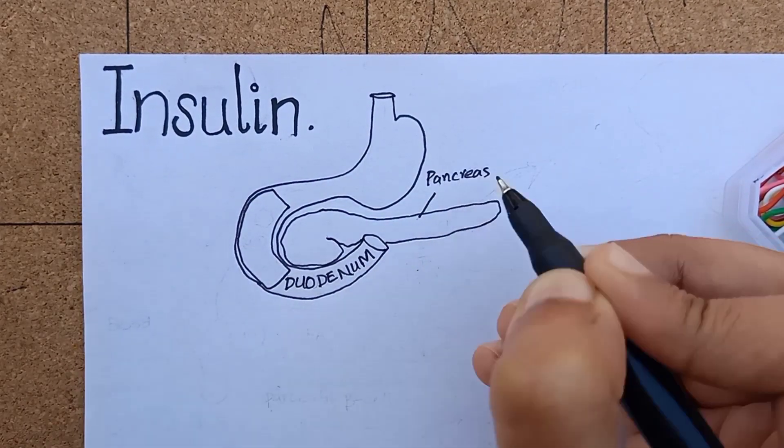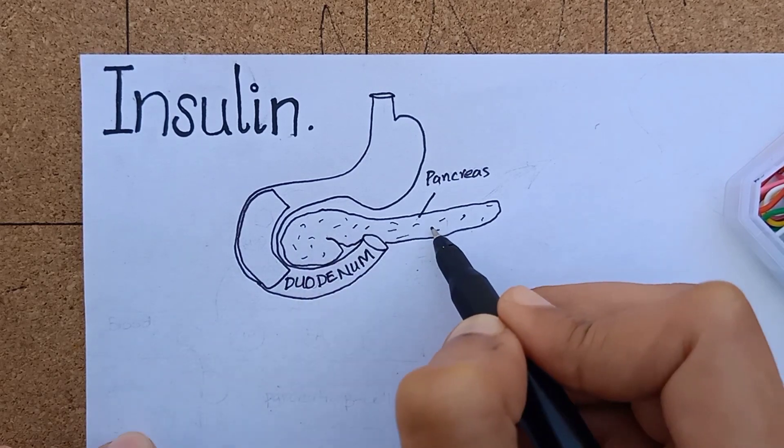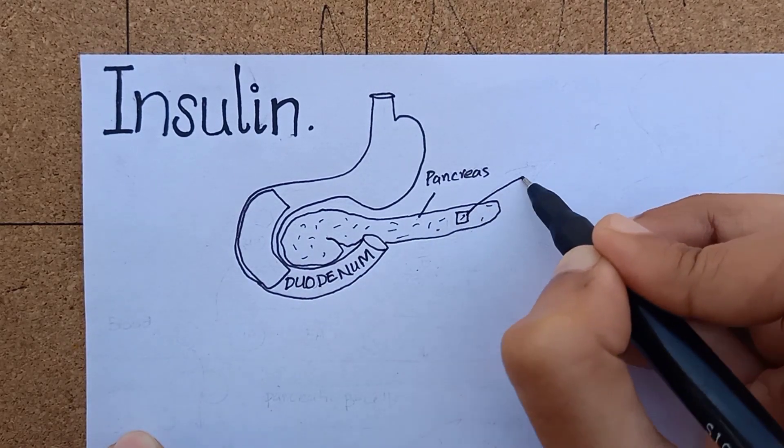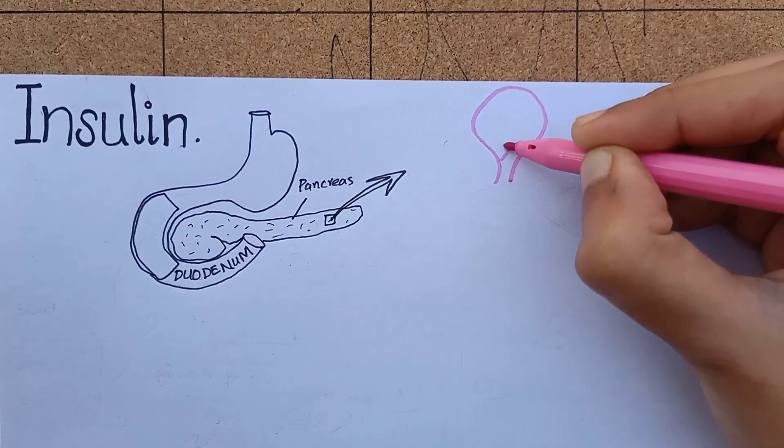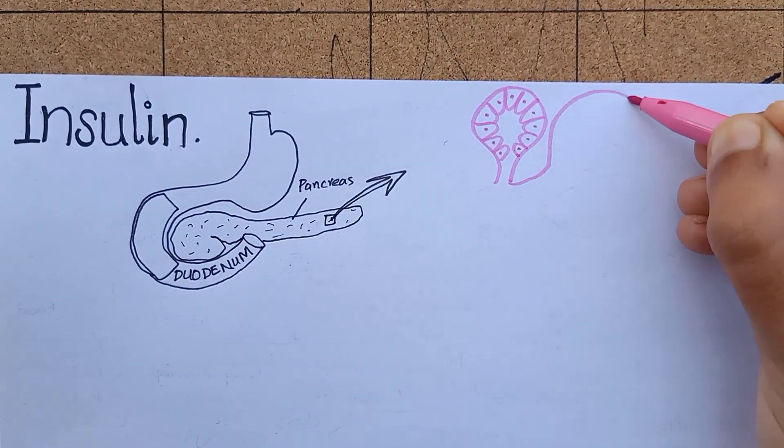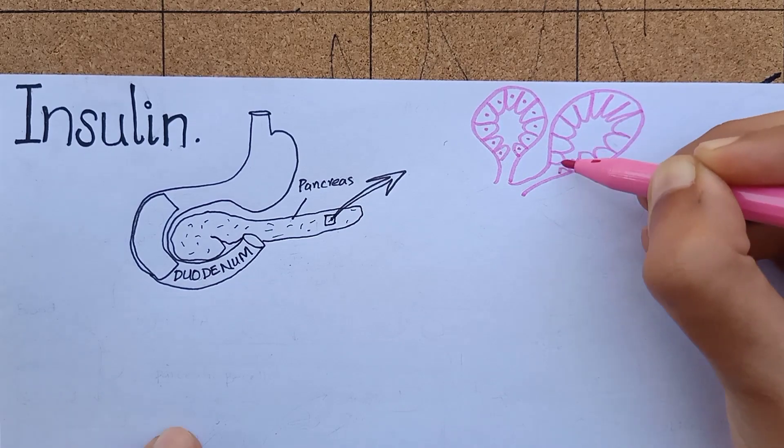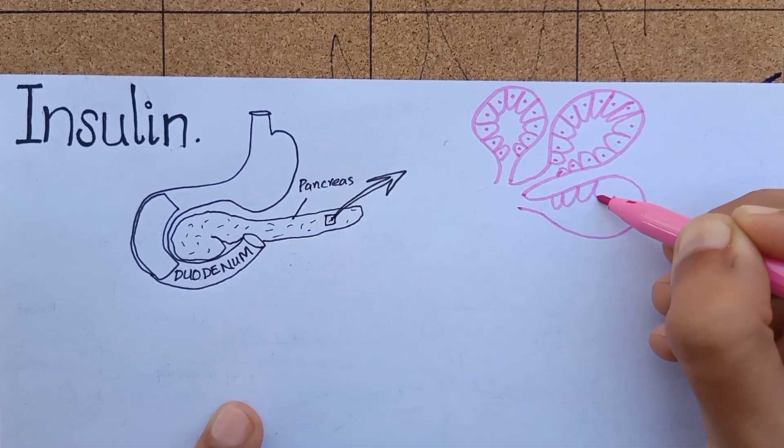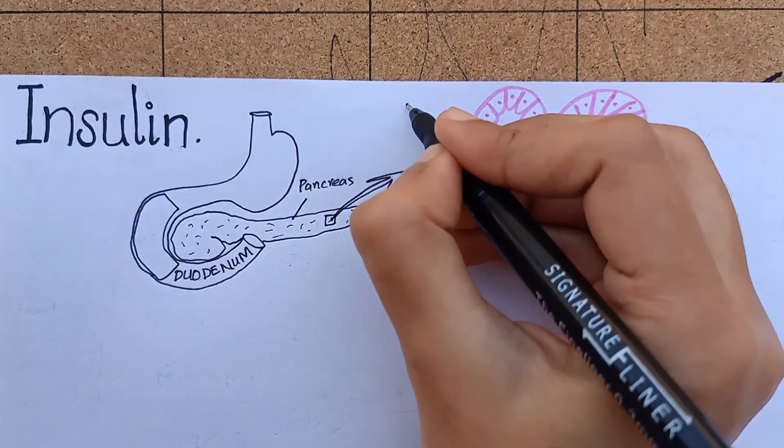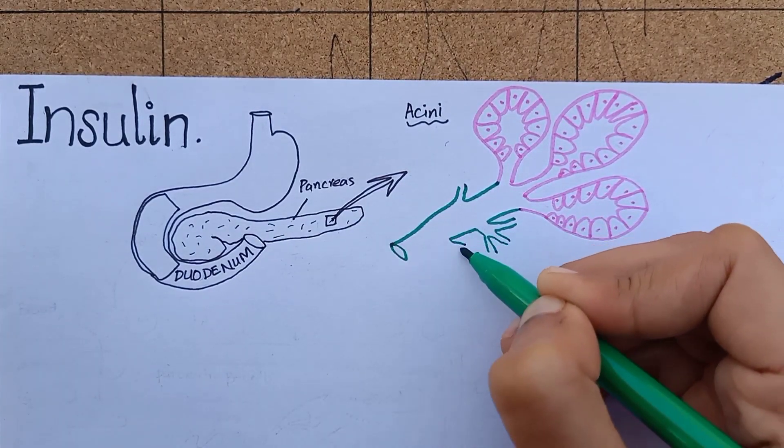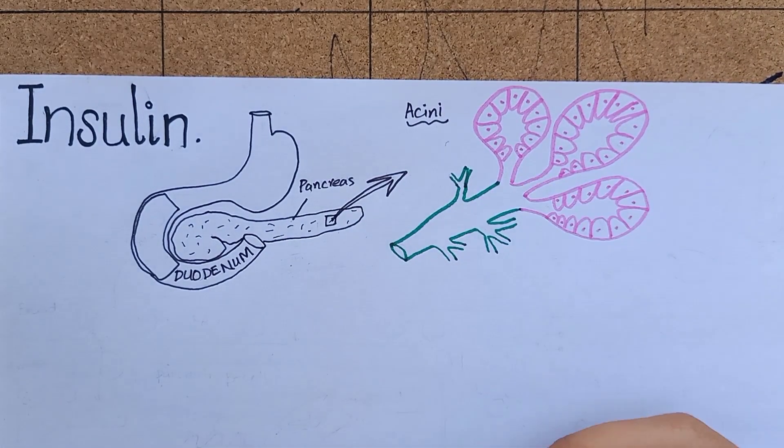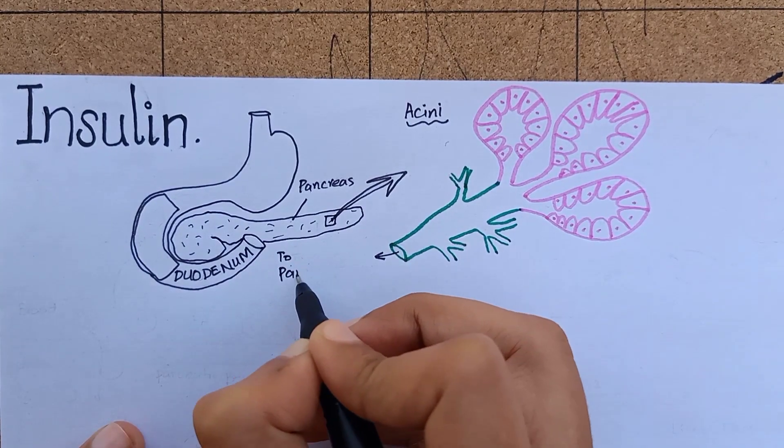As it is produced and secreted by pancreas, let's have a look into physiological anatomy of the pancreas. Pancreas is a heterocrine gland which means that it has both exocrine and endocrine tissues. The exocrine tissues are acini that make about 90% of pancreas. These acini secrete digestive juices into the duodenum by pancreatic duct.